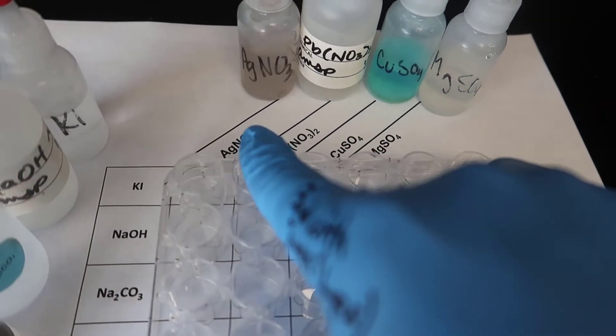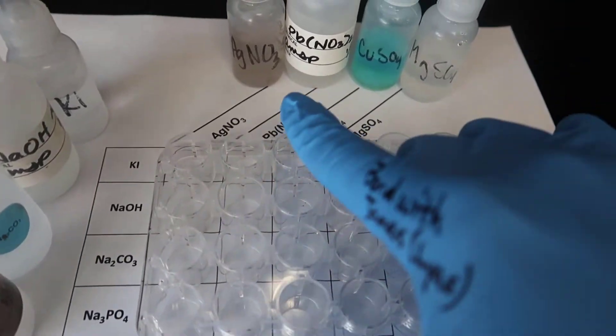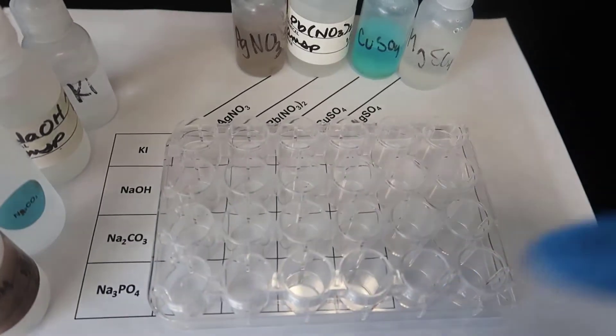And then two drops of AgNO3, since this is the first column, two drops here, two drops here, all the way down. Same thing with the PbNO32, two drops here, all the way down.